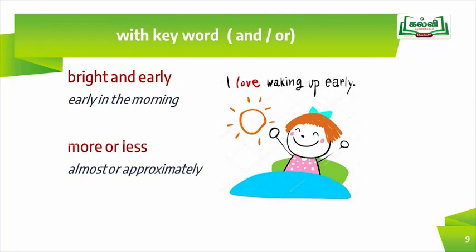Look at two examples. The first idiom is 'bright and early,' meaning early in the morning. The next is 'more or less,' meaning almost or approximately. In these two examples, we can find idioms with the keywords 'and' and 'or' respectively.